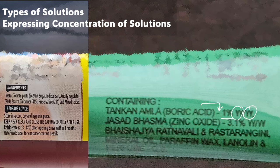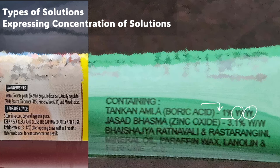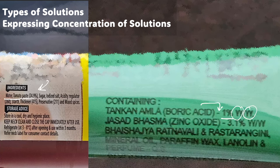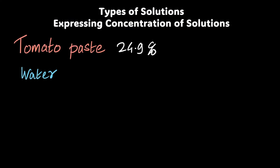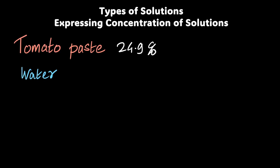Let's take this example of tomato sauce that has 24.9% tomato paste and a lot of other stuff. Let's say the rest of it is just water. Tomato paste 24.9%, rest of it is water. Now what is percent? It just means that in hundred of something.